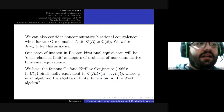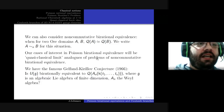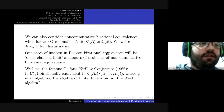We are interested in cases of Poisson birational equivalence that are quasi-classical limits — what in the previous talk was called a semi-classical limit — analogues of problems of non-commutative rational equivalence. To the best of my knowledge, the first problem in this line of inquiry is due to Gelfand and Kirillov in their remarkable paper of 1966.